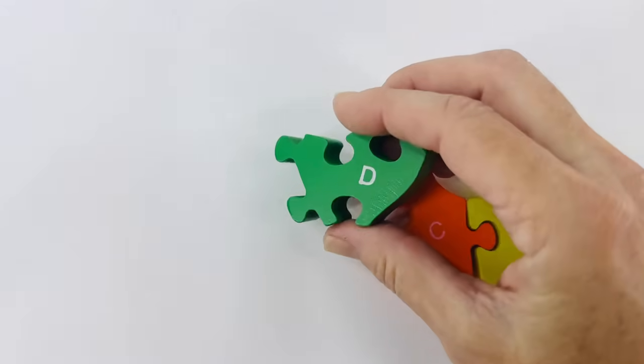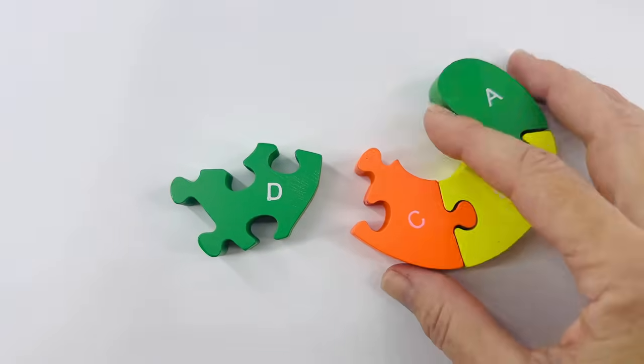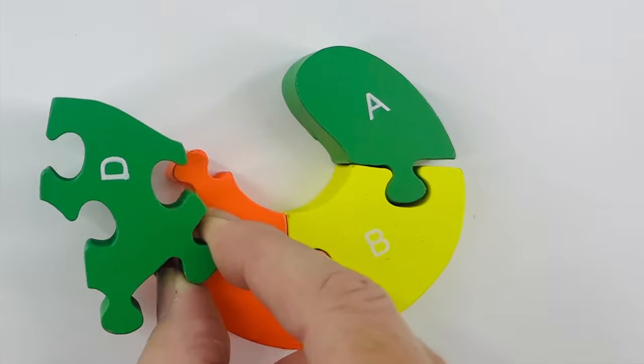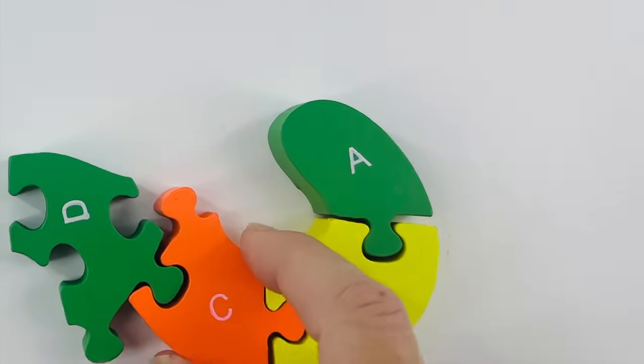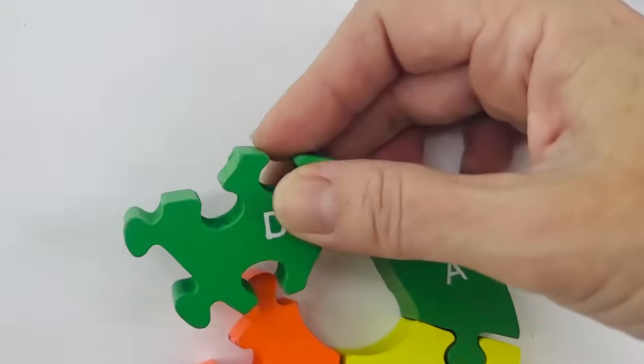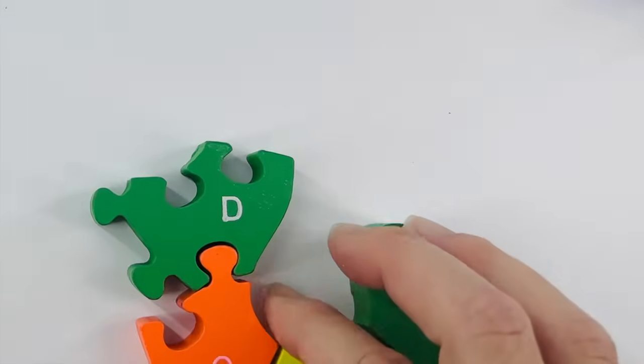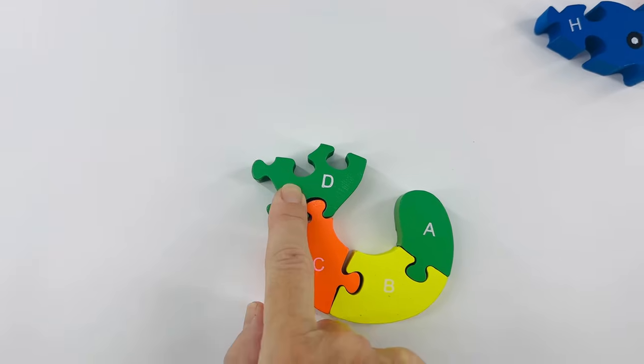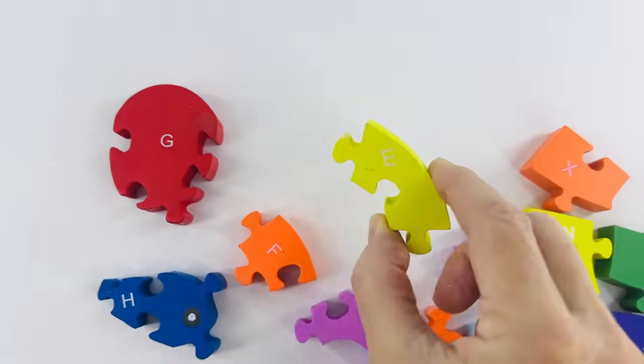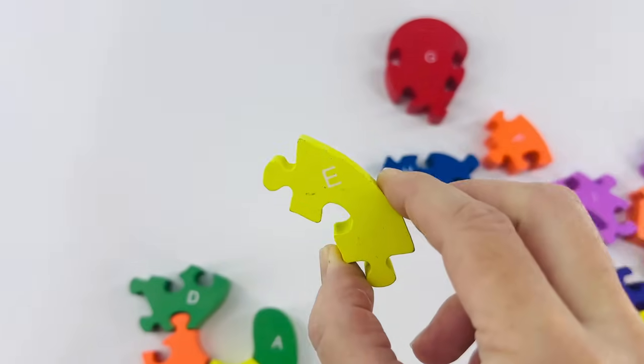I wonder how this fits into our puzzle. Let's see. Does it go here? I don't think so. What about here? Yes, I think that's it. After the letter D is E. Remember, that one's yellow. E is for elephant.